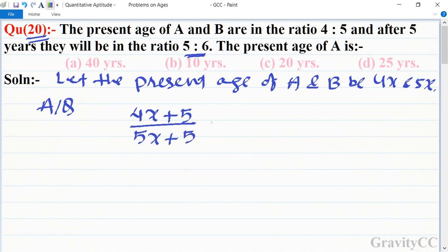After cross multiplication, we get 25x + 25 = 24x + 30.